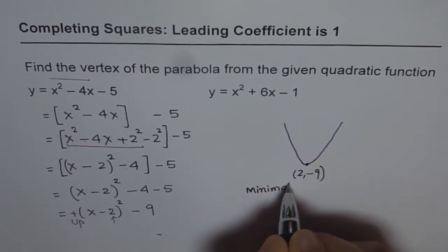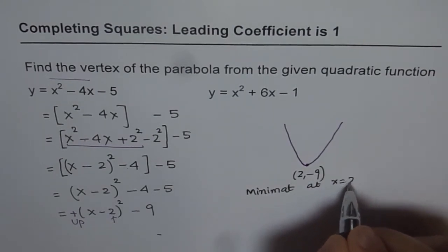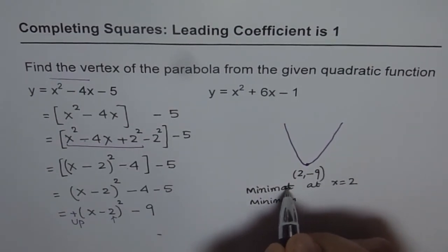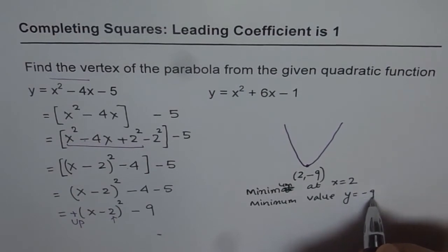So we have minimum at x equals to 2. And the value is, minimum value is the y value, which is y equals to minus 9.